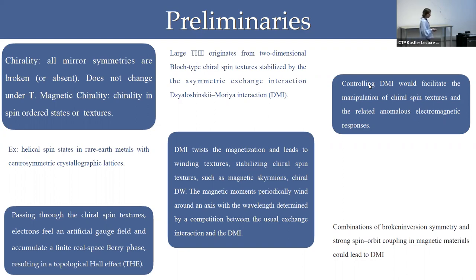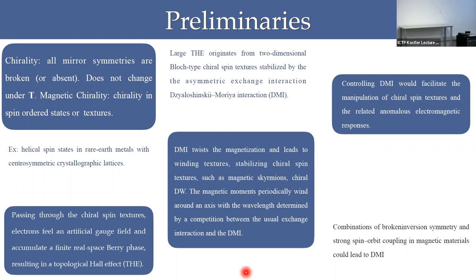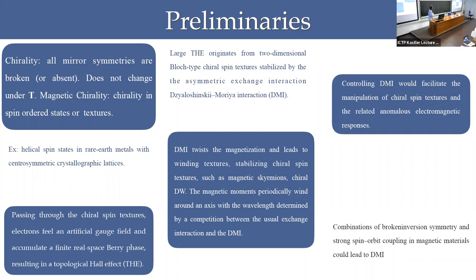Why is chirality important? We want to have a chiral magnetic system because interesting things happen. For instance, if electrons pass through some winding or chiral textures, they will feel an artificial gauge field, realize a Berry phase, and that can give rise to the topological Hall effect. There has been a large topological Hall effect from two-dimensional Bloch-type chiral spin textures, and the responsible interaction for those chiral structures has been the Dzyaloshinskii-Moriya type of interaction.